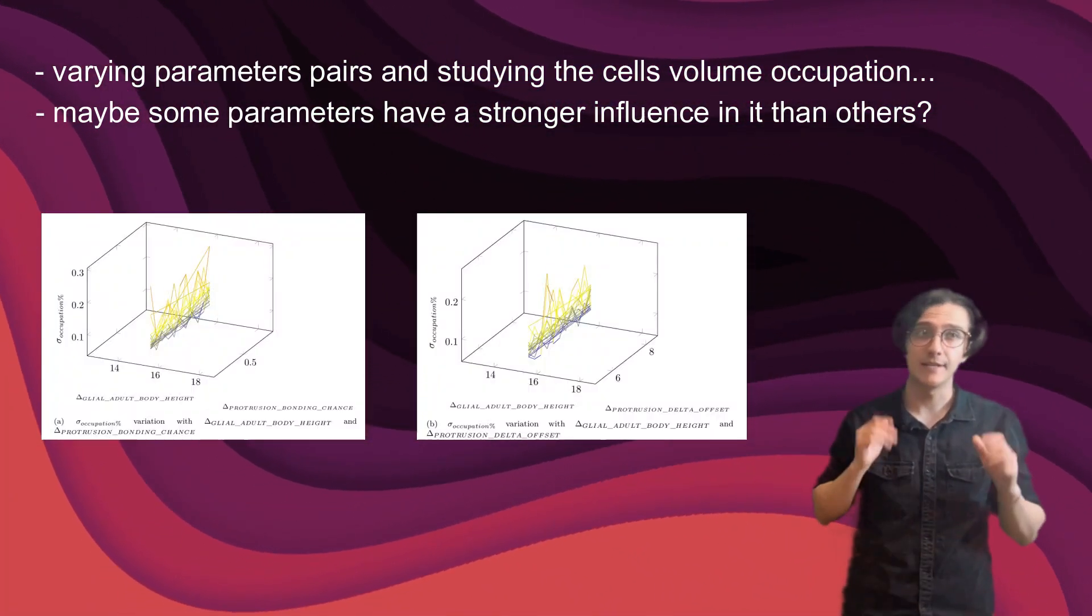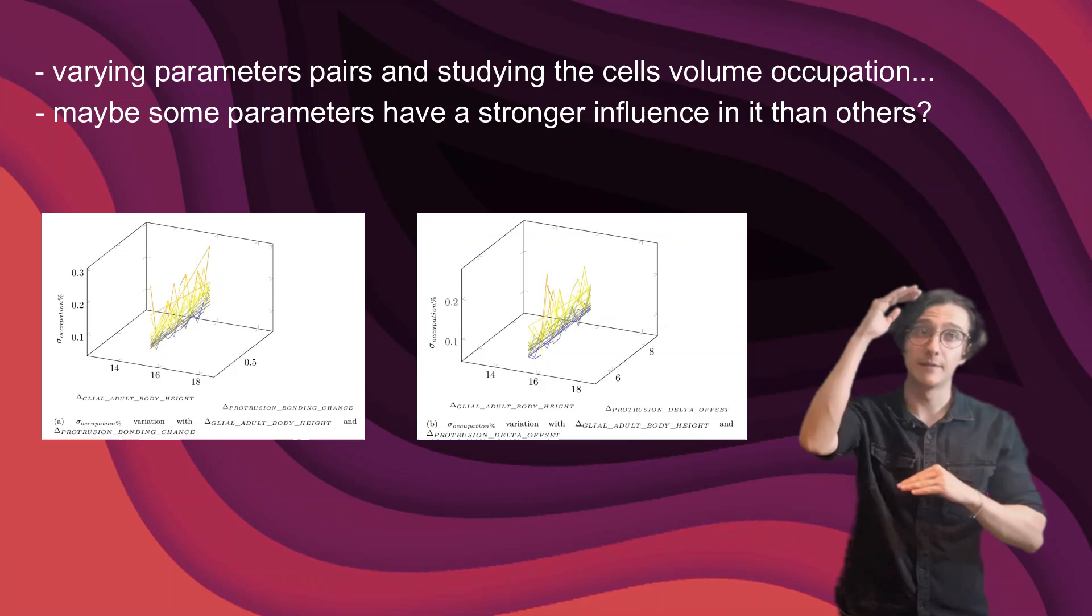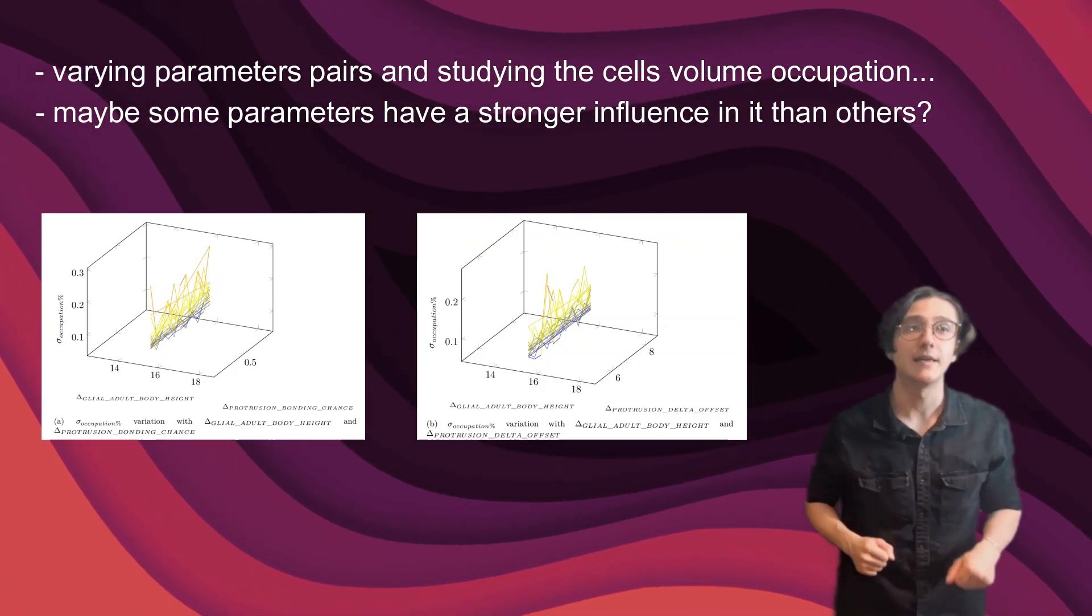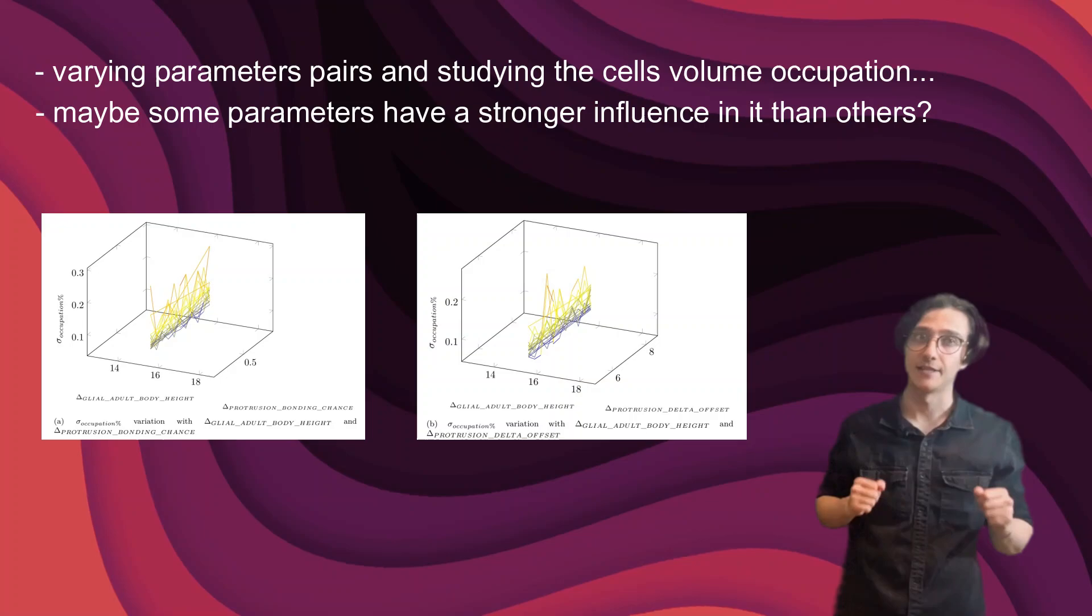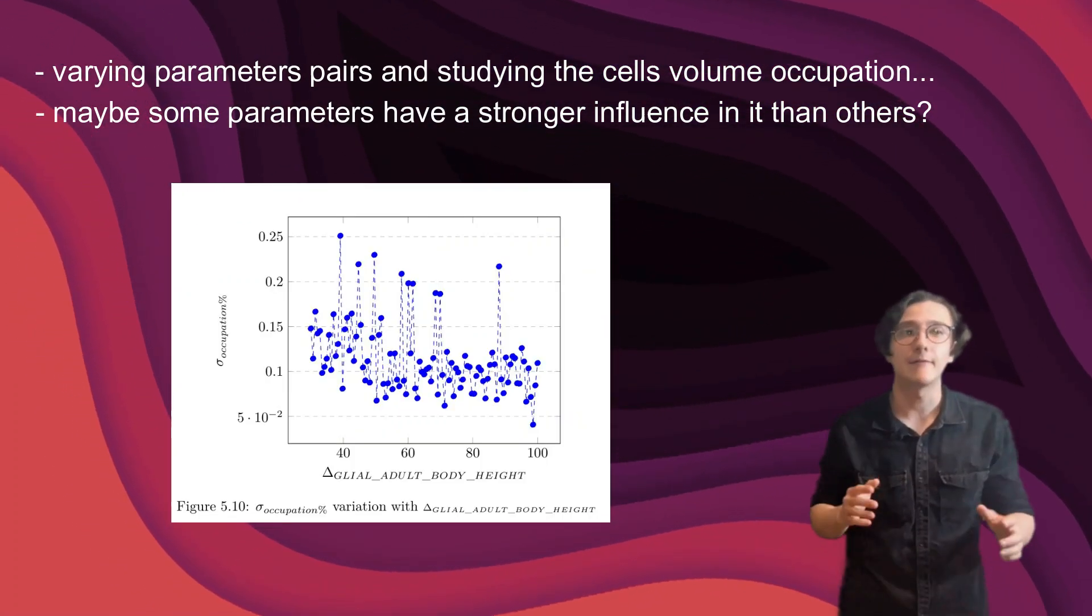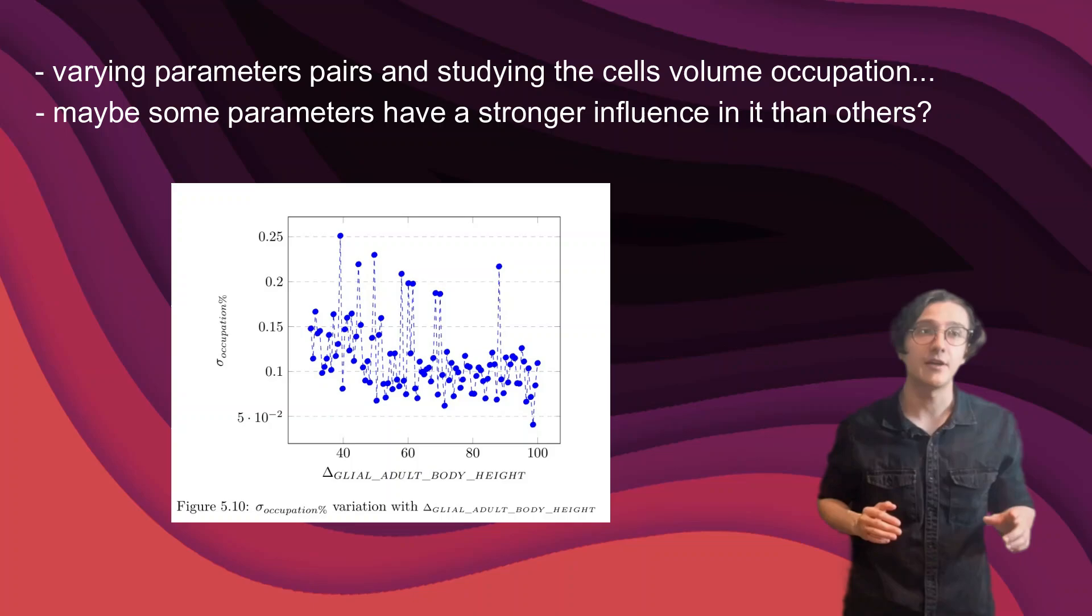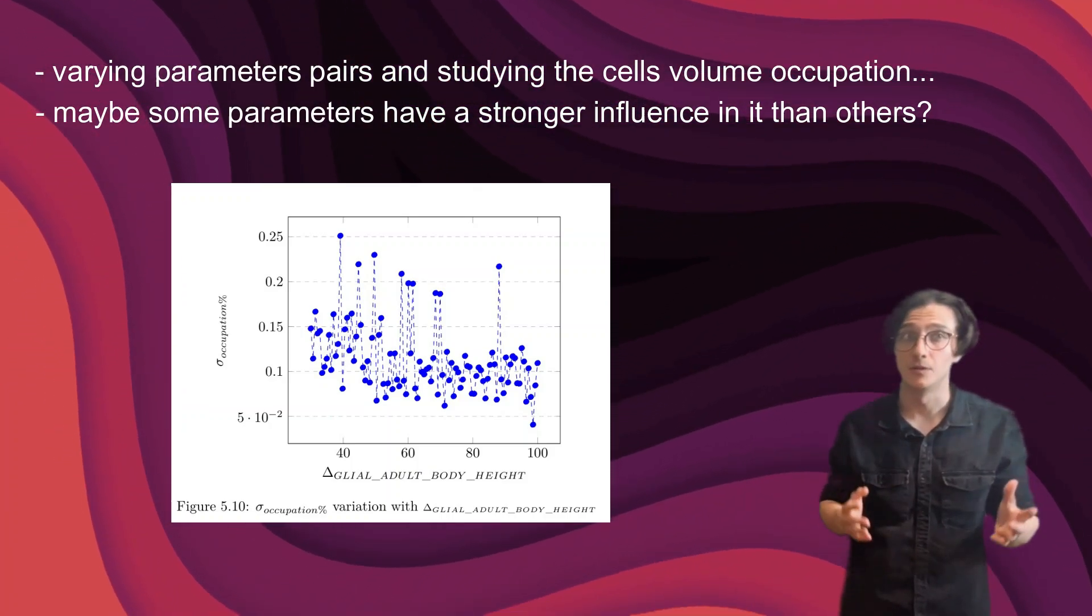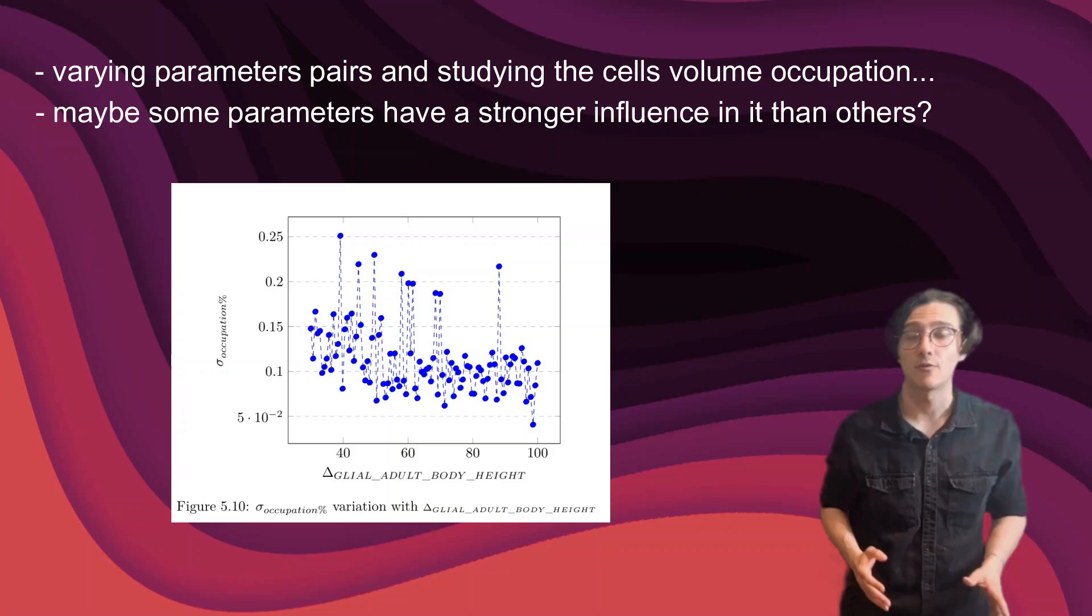Certainly enough, a pattern did emerge, suggesting the height the Müller glial cell ends up being at maturity state is strongly influential in the resulting standard deviation percentage of the occupied volume of the simulated cells in the retina. In other words, this model predicts the variation in the height of mature Müller glial cells may be responsible for their spatial distribution uniformity in the retina.